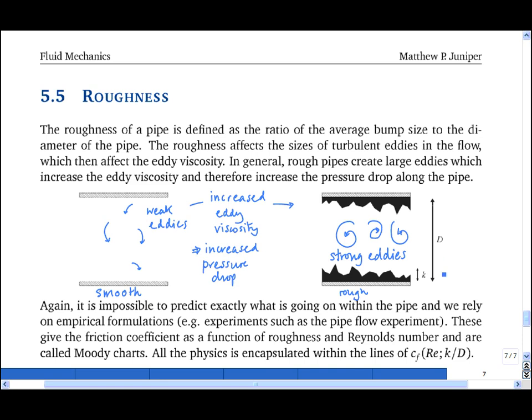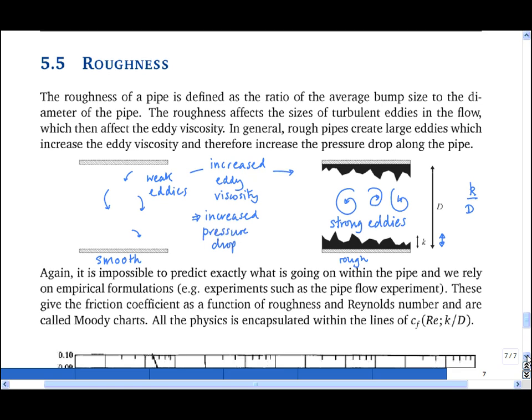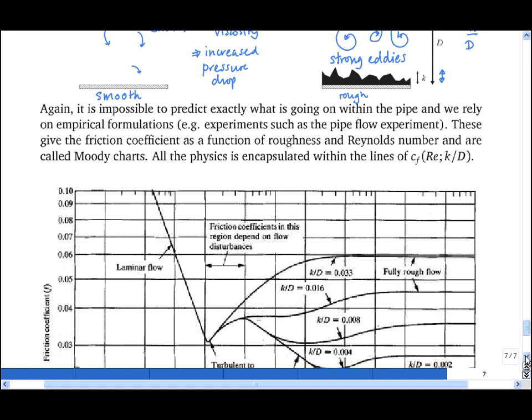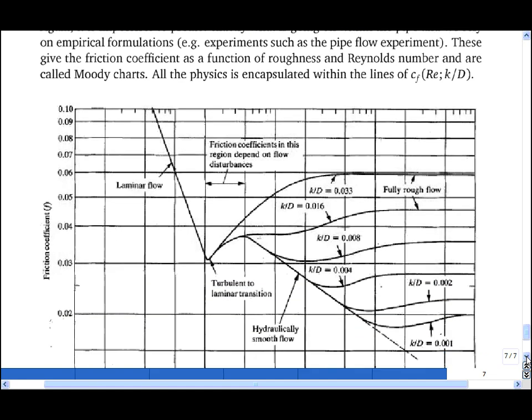The roughness is quantified by the ratio of the roughness height to the diameter of the pipe, so that's k divided by d. As for smooth pipes, once you get to the transitional and turbulent regime, it's impossible to predict exactly what is going on inside the pipe.